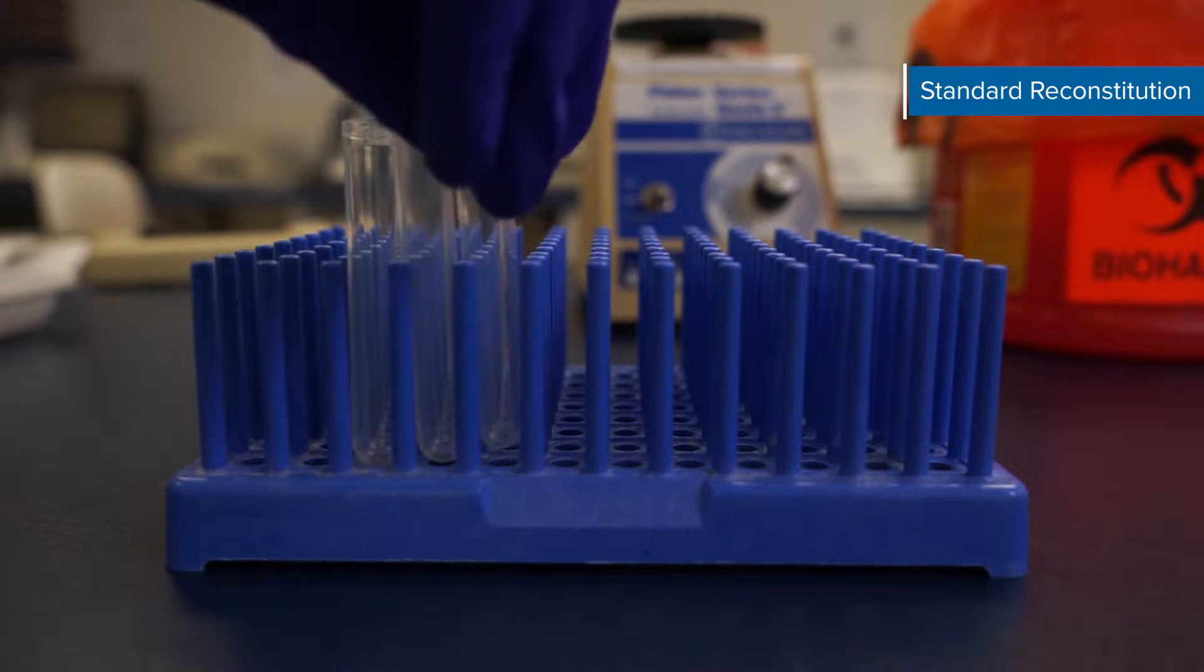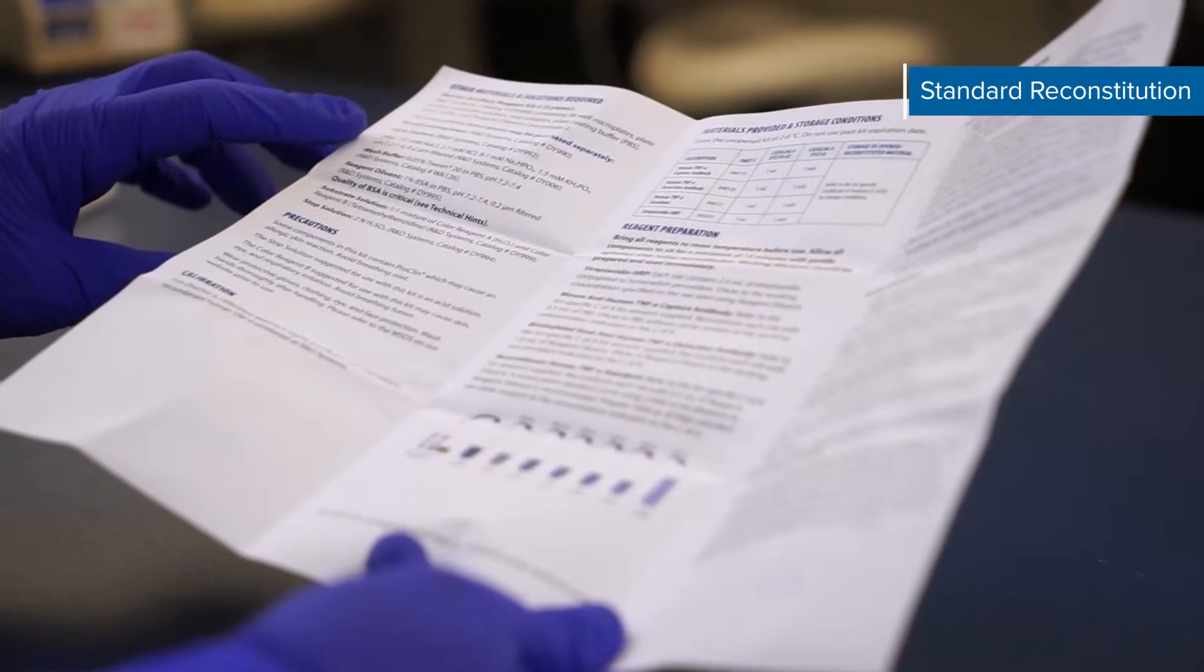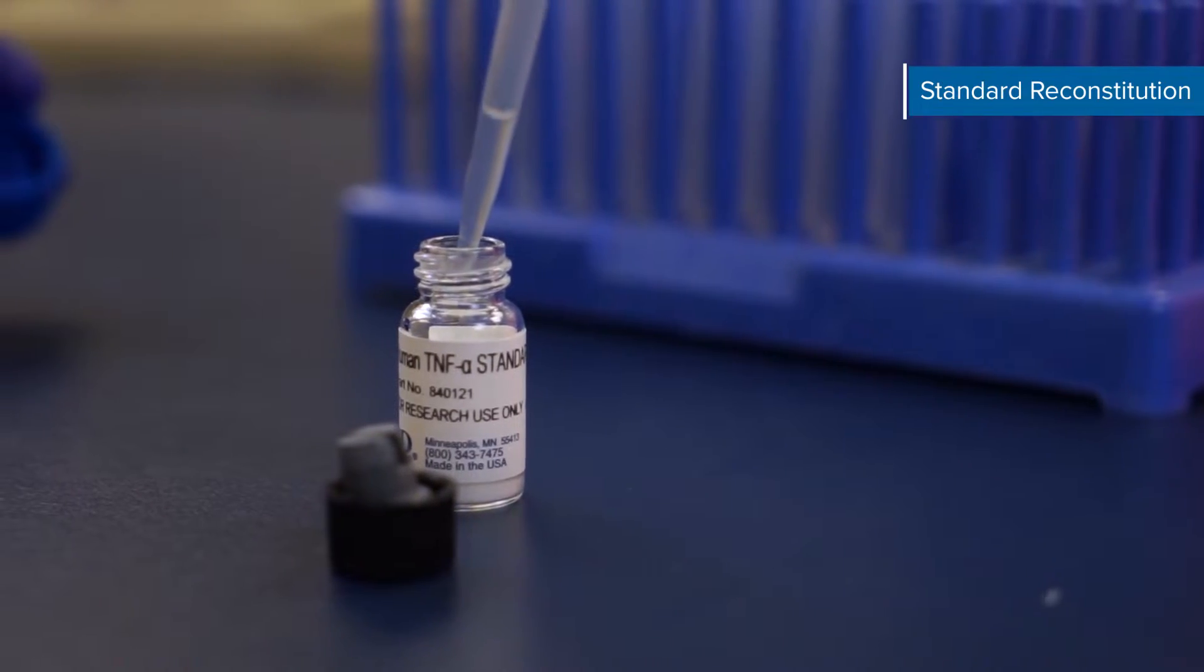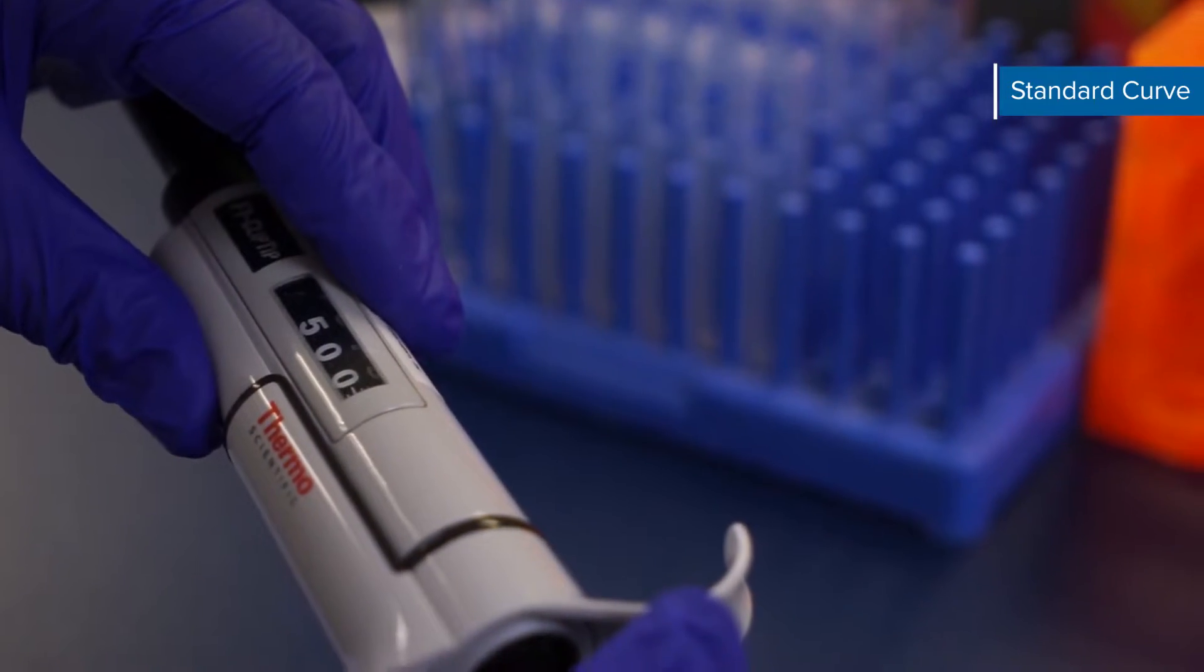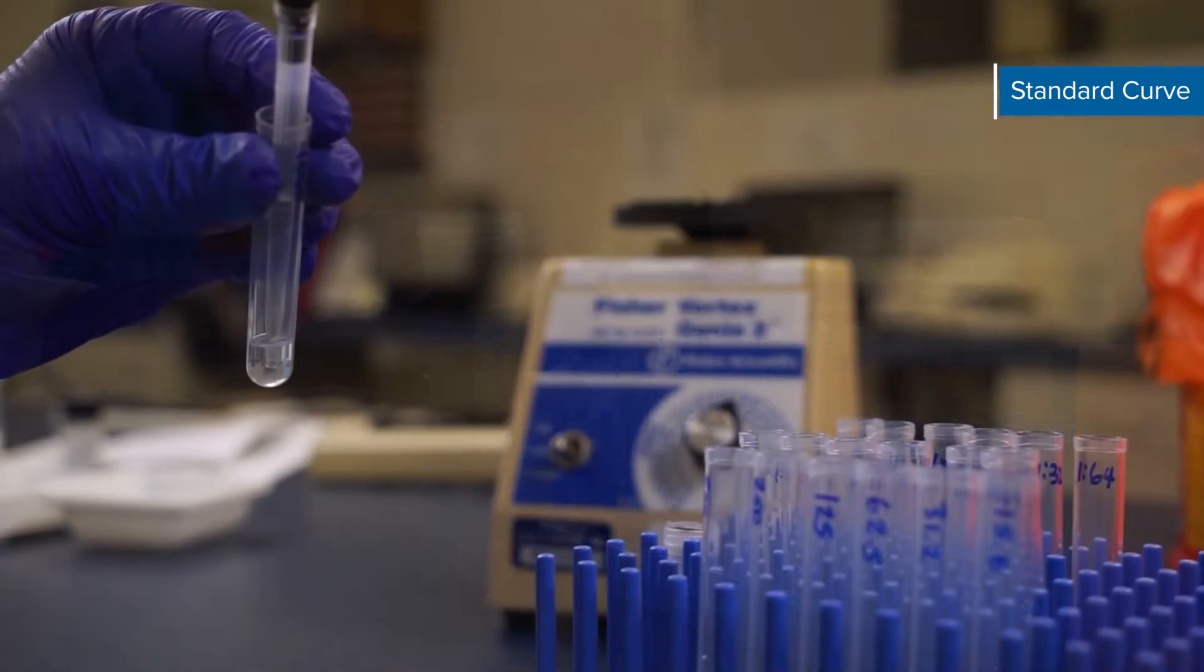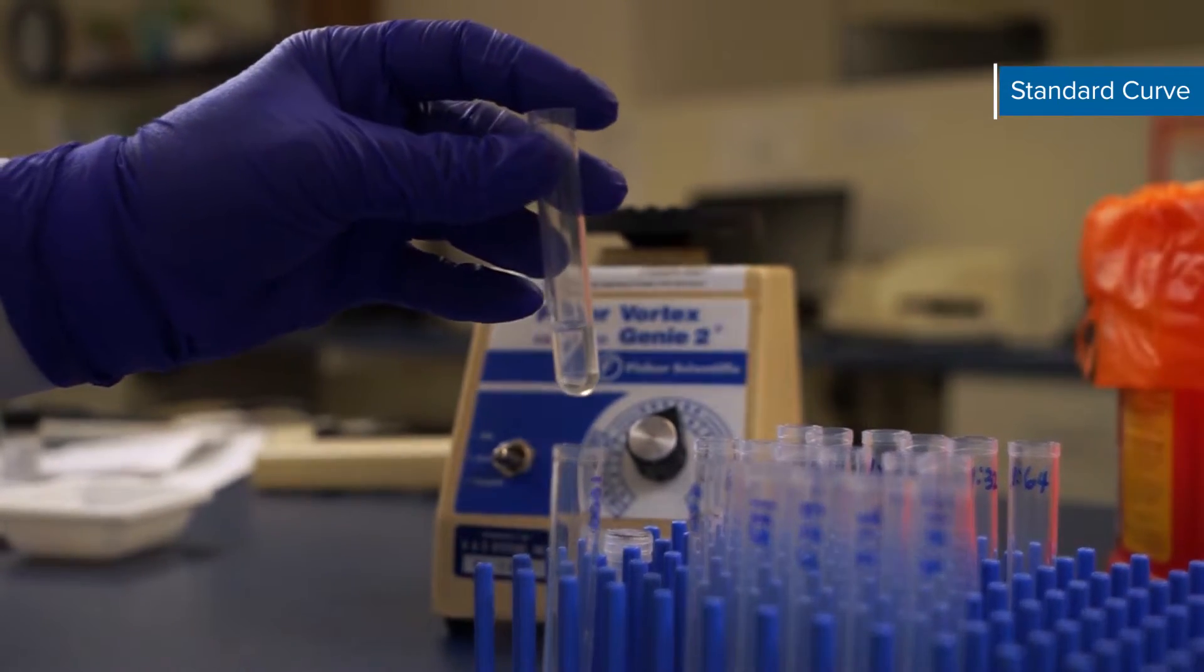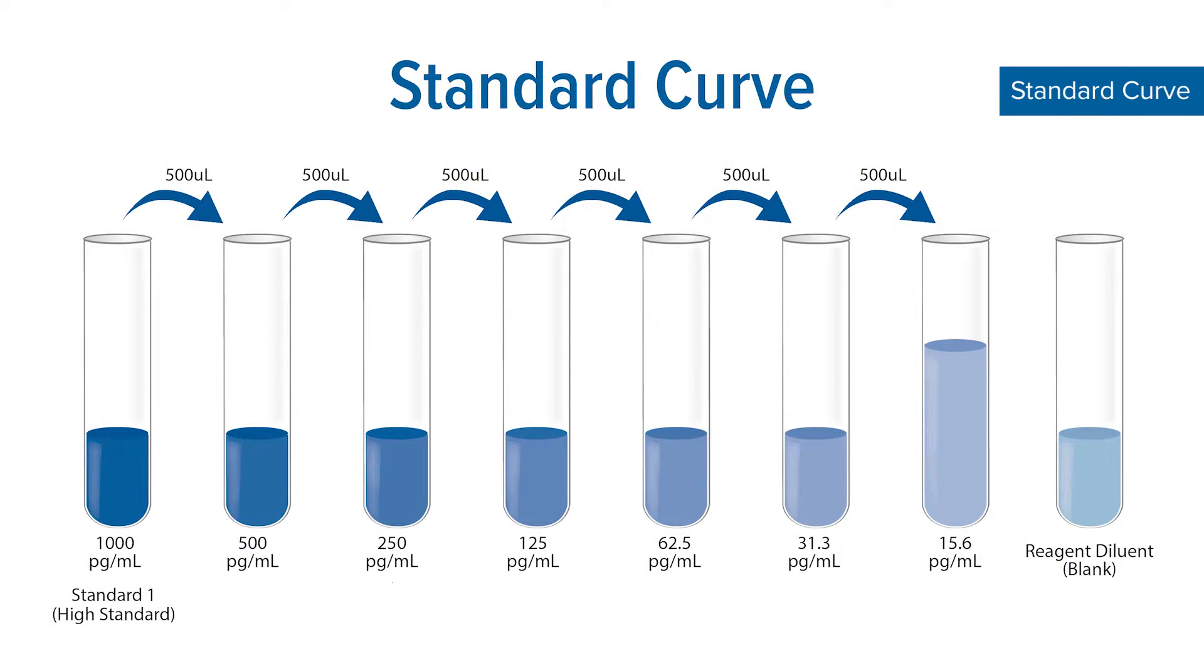The standard curve should be prepared last so that it may be added to the plate with minimal delay. A seven-point standard curve using two-fold serial dilutions is outlined in the assay insert. Prepare 1000 microliters of high standard per plate and place it in the first tube. 500 microliters of reagent diluent is added to the remaining six standard curve tubes. Serial dilute the standard curve by transferring 500 microliters from the 1000 picogram per milliliter standard to the 500 picogram per milliliter tube. Gently mix then transfer 500 microliters from the 500 picogram per milliliter tube to the 250 picogram per milliliter tube and so on until the curve is complete.